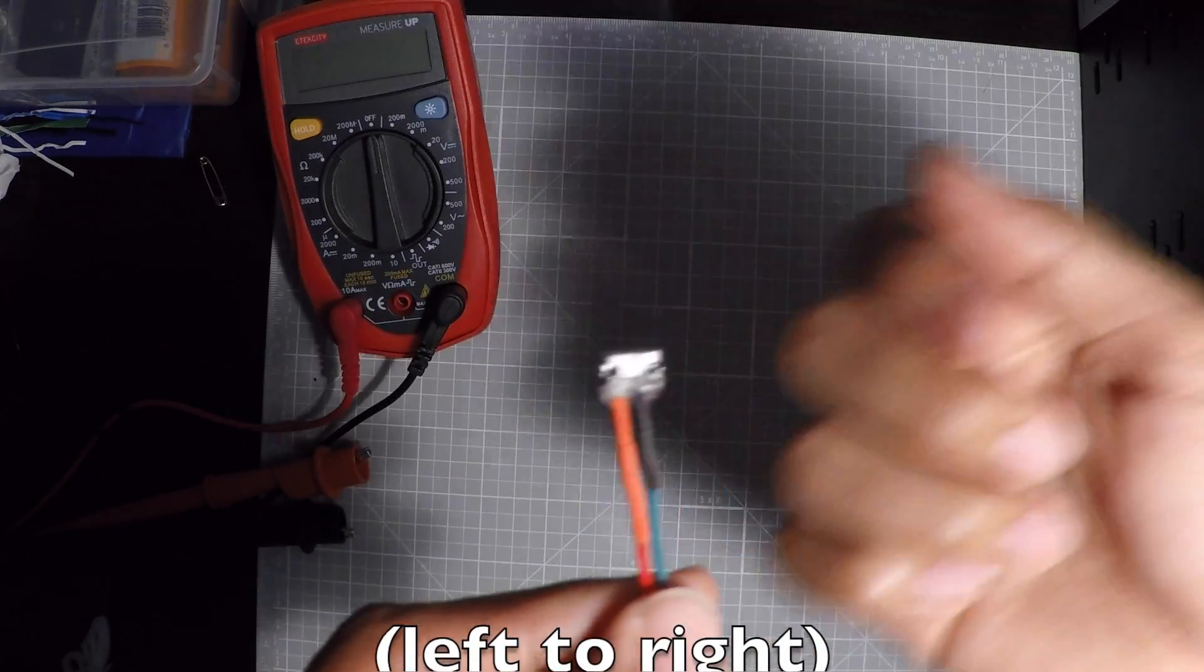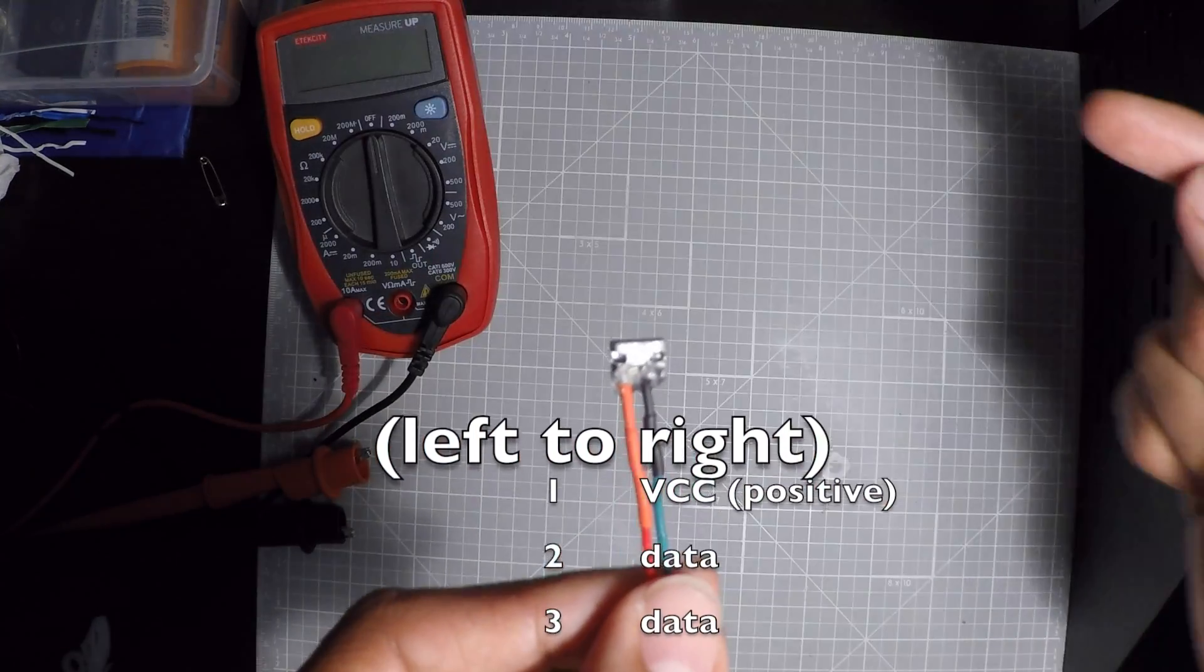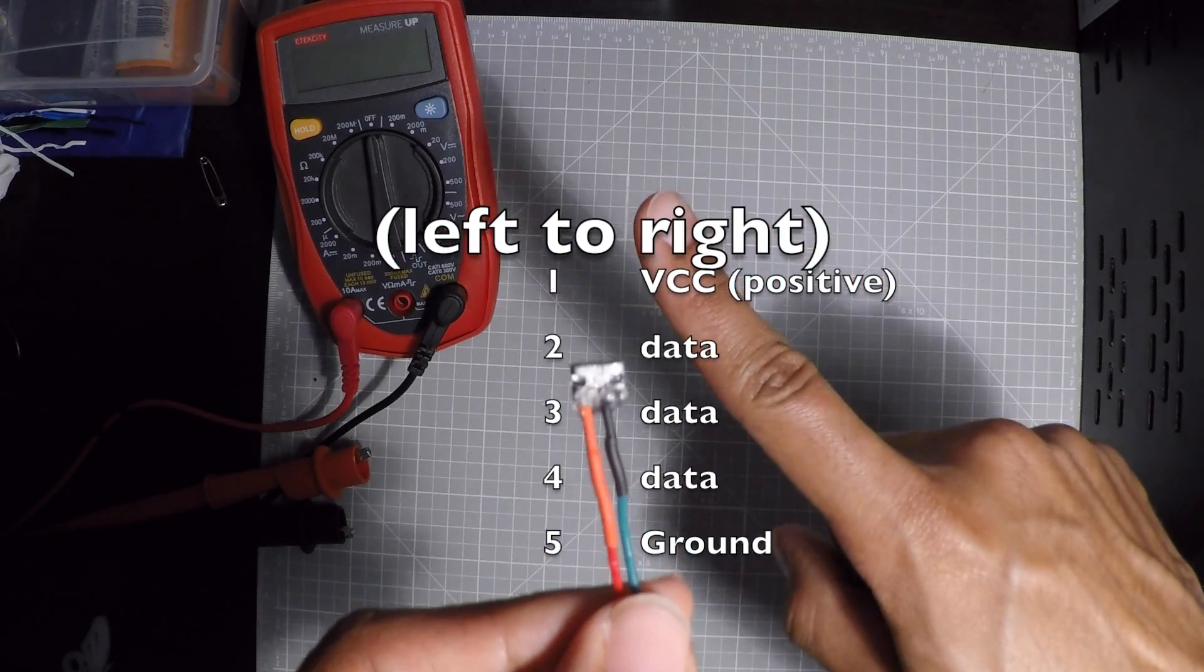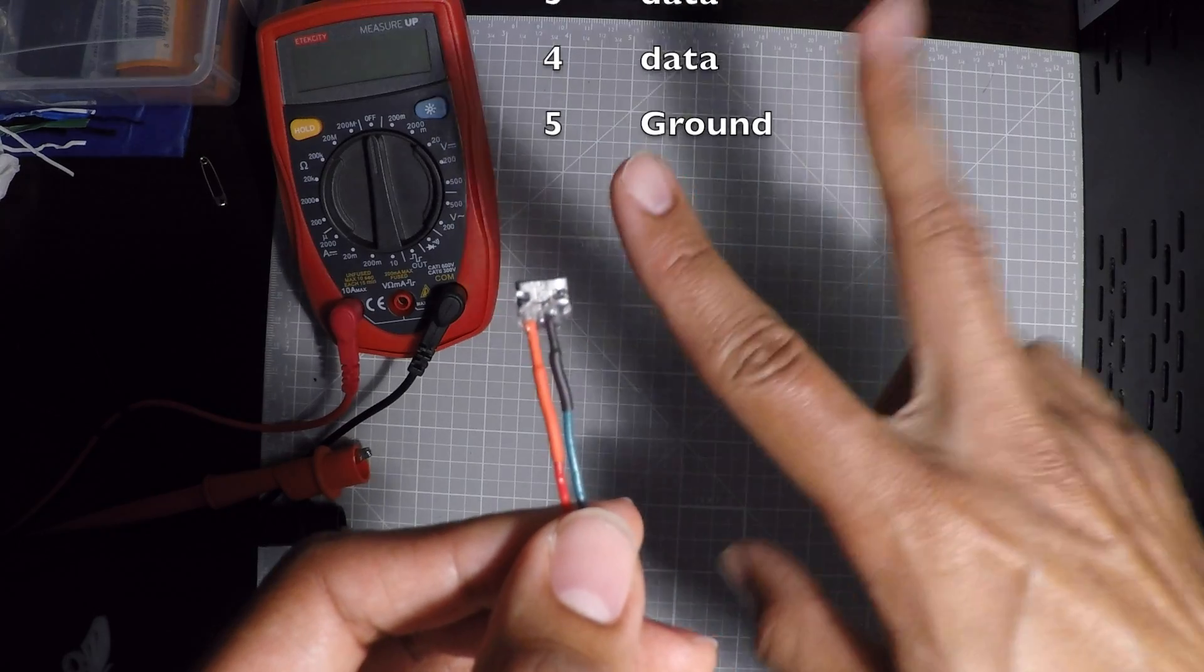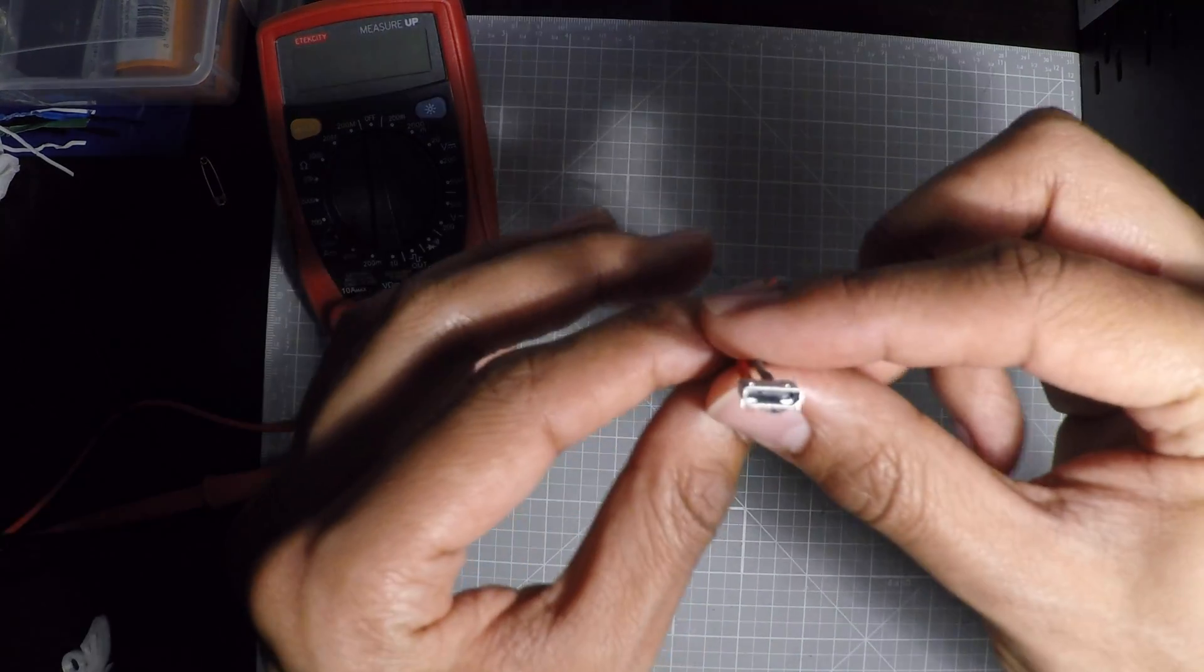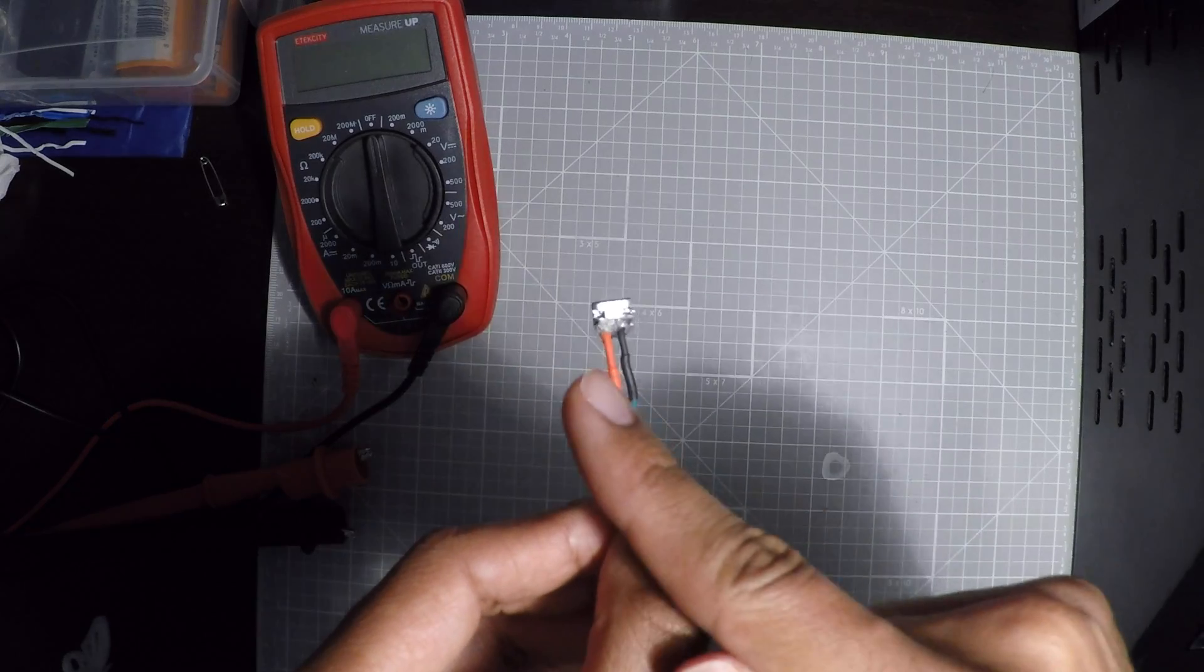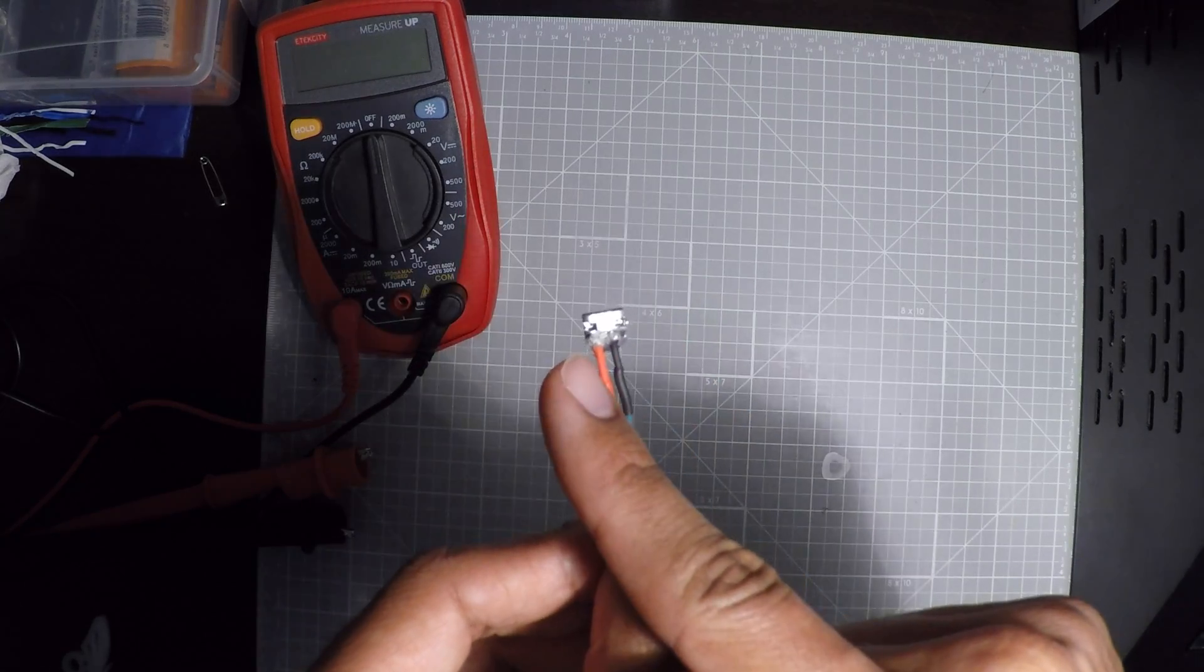In summary, the USB has 5 wires, but we're only interested in 2: the VCC, which is the 5 volt power line, and the ground. These two are at the ends, so we only need one and the other.